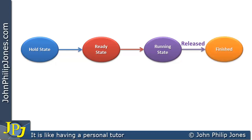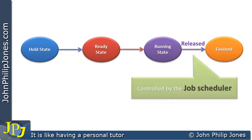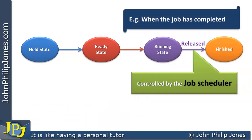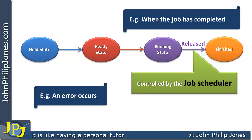When the process completes, the job is released and goes to the finished state. This is controlled by the job scheduler, which will get rid of the process control block associated with the completed job. We should also note that it is possible for the process to be released if an error occurs during execution.